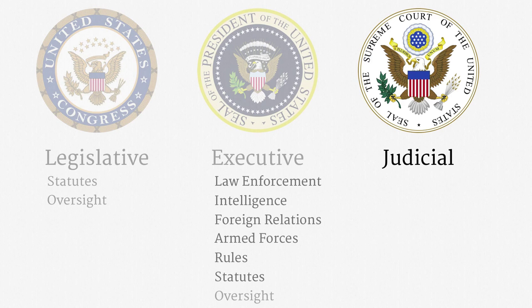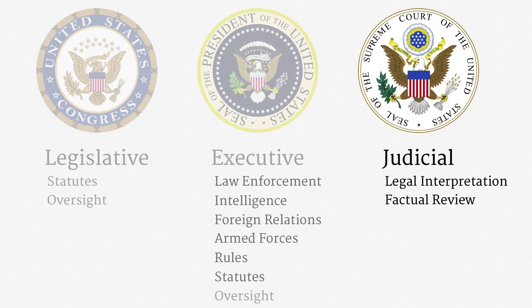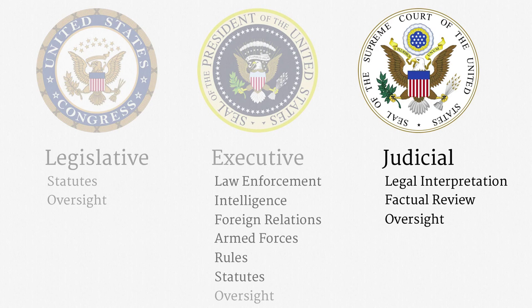The third branch consists of the federal judiciary. In the course of adjudicating disputes, federal judges have to interpret the law, including statutes and the Constitution. Legal interpretation can be much more of an art than a science. Courts also engage in factual review — many areas of surveillance law require a degree of proof before the executive branch can start snooping. The executive has entirely understandable incentives to pursue vigorous law enforcement and intelligence, so an independent branch that doesn't report to the executive is much more impartial. Judges can and have been outspoken on surveillance issues, including in the media.